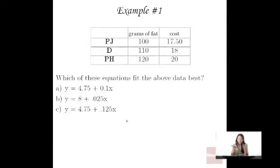Here's example one. Pretend this is data from three different kinds of pizzas - medium, large pizza. This is actually sort of a conservative estimate of grams of fat. Let's say this is Papa John's pizza. It has 100 grams of fat per pizza, but the cost is $17.50. But Domino's is 110 grams of fat per pizza, but the cost is $18. And Pizza Hut's has 120 grams of fat, but the cost is $20. So maybe we might have a feeling that maybe more fat makes it taste better, so it costs more. But the question is, which of these following equations fit this data the best?